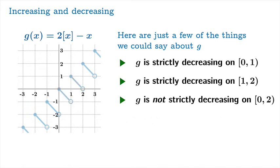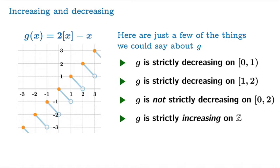You can isolate out the subset of the domain consisting of just the integers, and you'll notice that g is actually strictly increasing on that set. So it might be surprising, but this function is so strange that — because the definition of increasing and decreasing is what it is — you can say things that sound mutually contradictory. How can a function be strictly decreasing on some intervals and strictly increasing on another? But it is what it is. These are the definitions, and you have to carefully work them through.